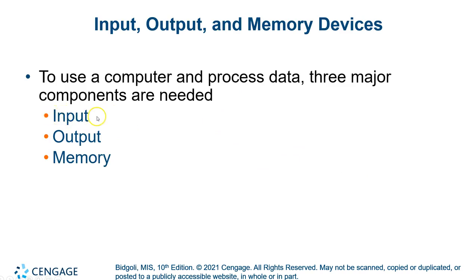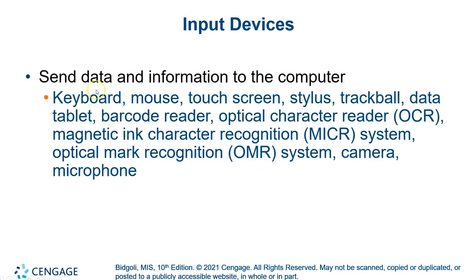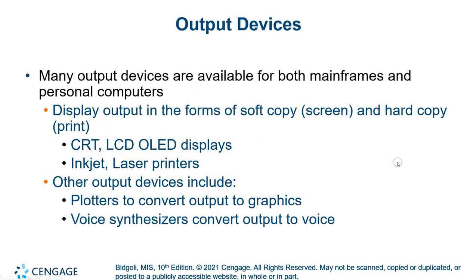We need input devices, output devices, and storage devices for this to work. Input devices include touchscreens, trackballs, barcode readers, QR codes, reading your eyeballs, optical character readers like Scantron machines, reading the ink on the bottom of a check or your debit card, cameras, and microphones — many different ways to get data into a computer.